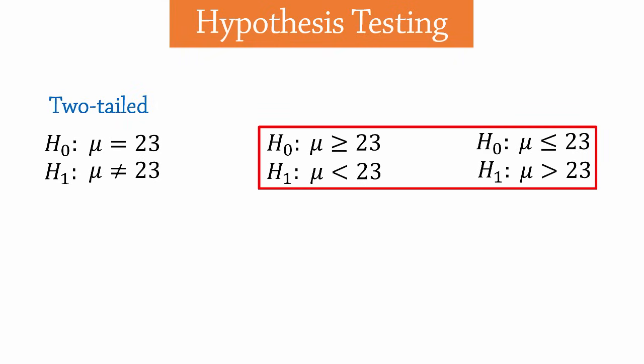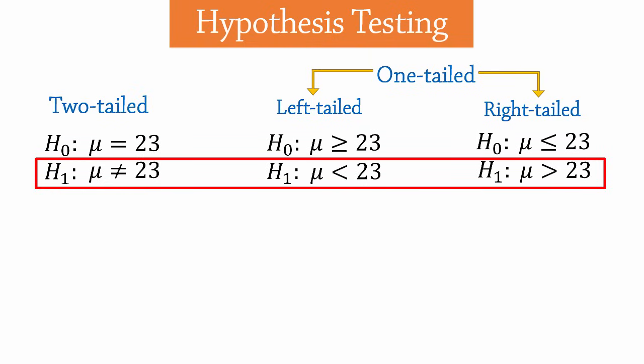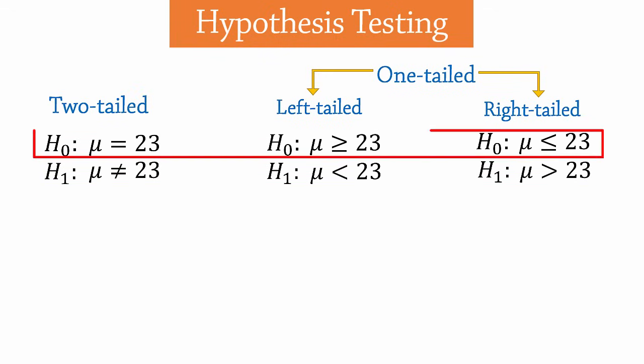These two are hypotheses for one tail tests. This is for a left tail test because the alternative hypothesis has a less than sign. And this is for a right tail test because the alternate has a greater than sign. Note that the alternative hypotheses determine the tail of the test. Note also that the alternative hypotheses never contain equality. And the null always contains equality.